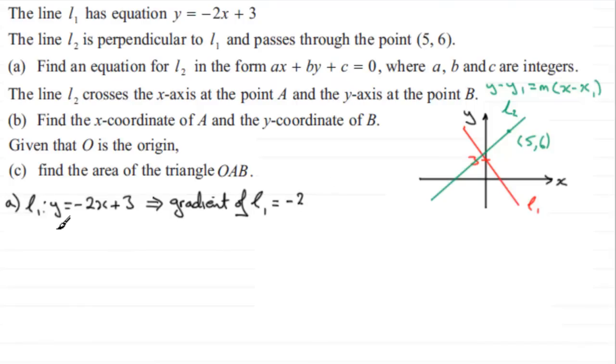And that means that a perpendicular gradient is always the negative reciprocal of a gradient. You should be familiar with that rule. So therefore the gradient of L2 is going to be the negative reciprocal. So we just switch the sign, that would be plus, and that would mean it's 1 over 2. The product of perpendicular gradients, if you multiply them together, always should give negative 1.